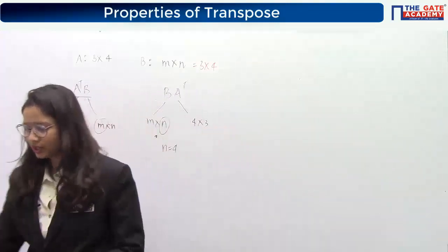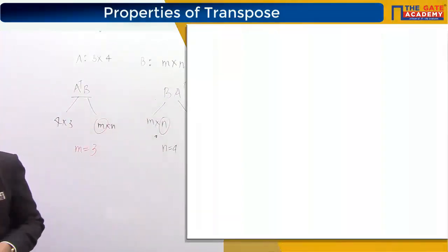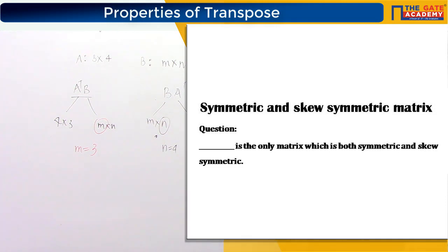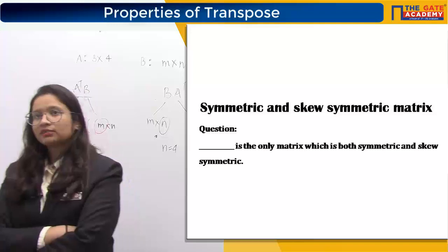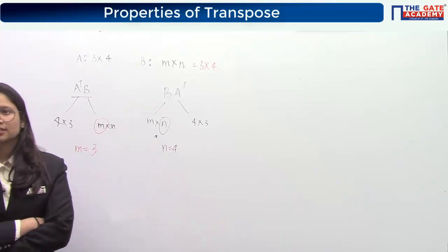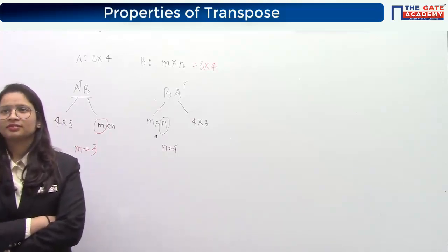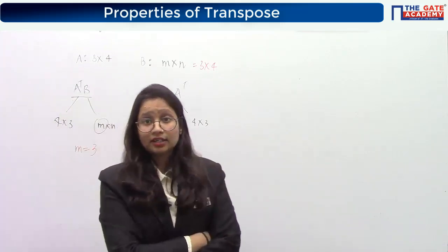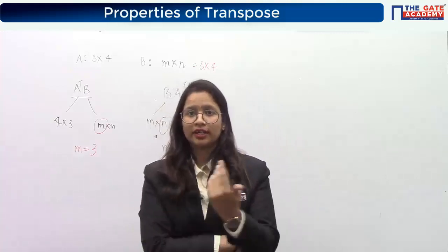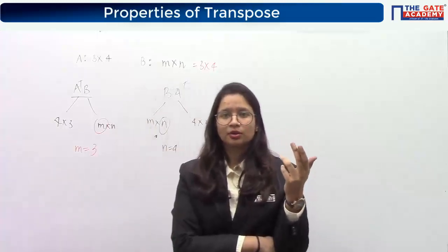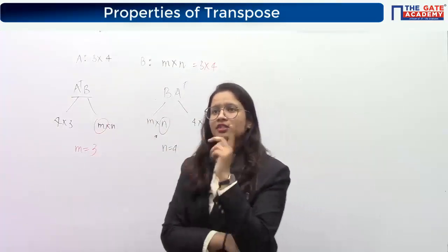We have discussed symmetric and skew symmetric. Now, which is the only matrix that is both symmetric and skew symmetric? The answer is the null matrix, because a matrix for which A transpose equals both plus A and minus A simultaneously can only be zero. Just like the number zero equals both plus zero and minus zero.